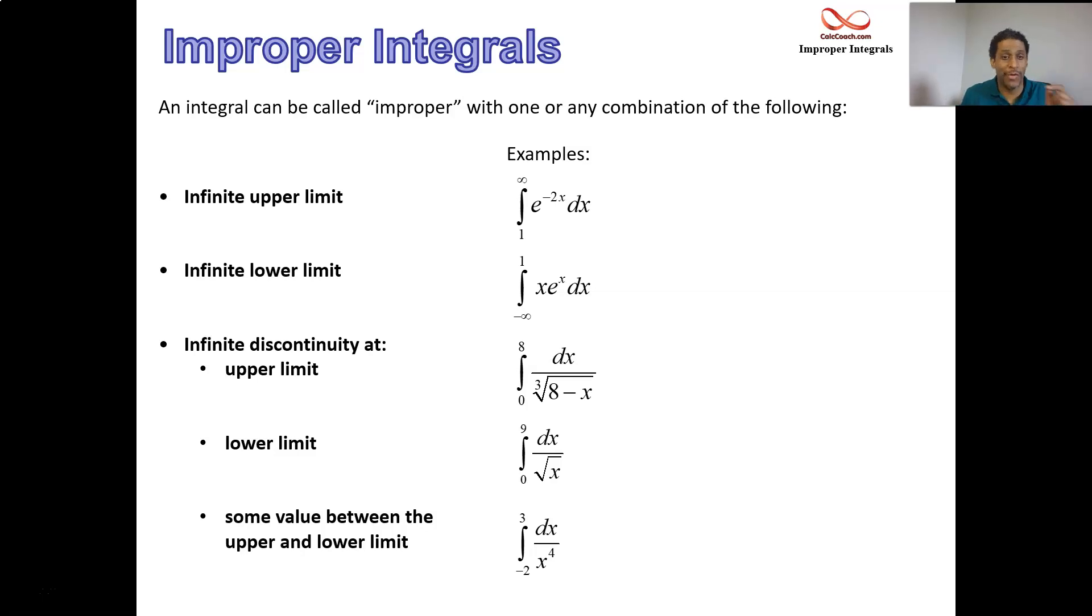We have to introduce a limit. We can't plug in infinity. You can't treat infinity like a number, the way you treat a finite number. You can't plug it in. And so what you do with infinity, of course, going back to Calc 1, you have to take a limit as the variable approaches infinity.